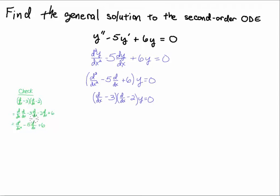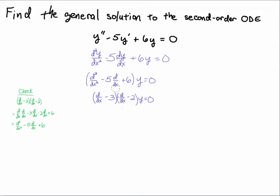Collecting like terms gives minus 5·d/dx, so yes, this operation works with these derivative operators. Notice this looks just like our characteristic equation: in the previous video we had r² − 5r + 6, and here we have (r − 3)(r − 2). I could have switched the order to (r − 2)(r − 3) — it's completely arbitrary.